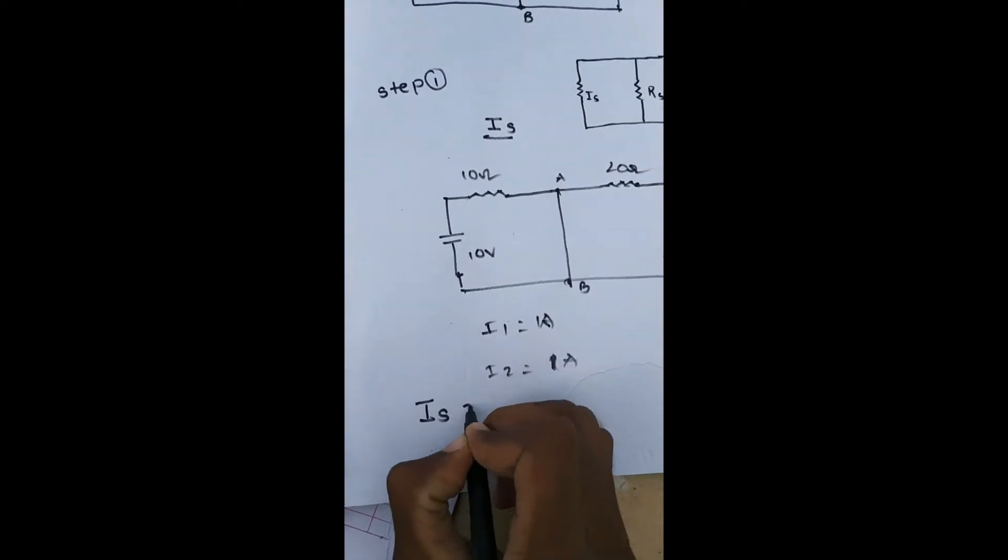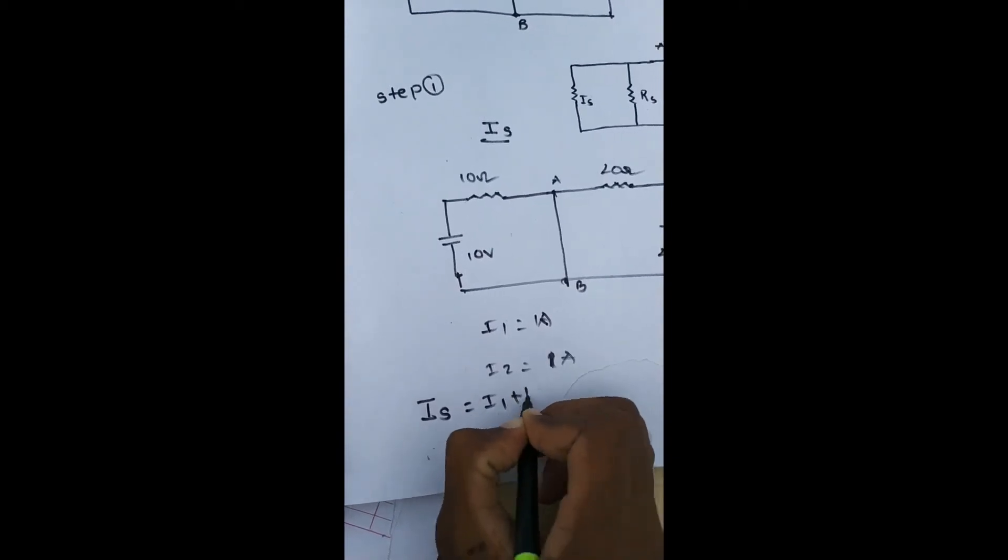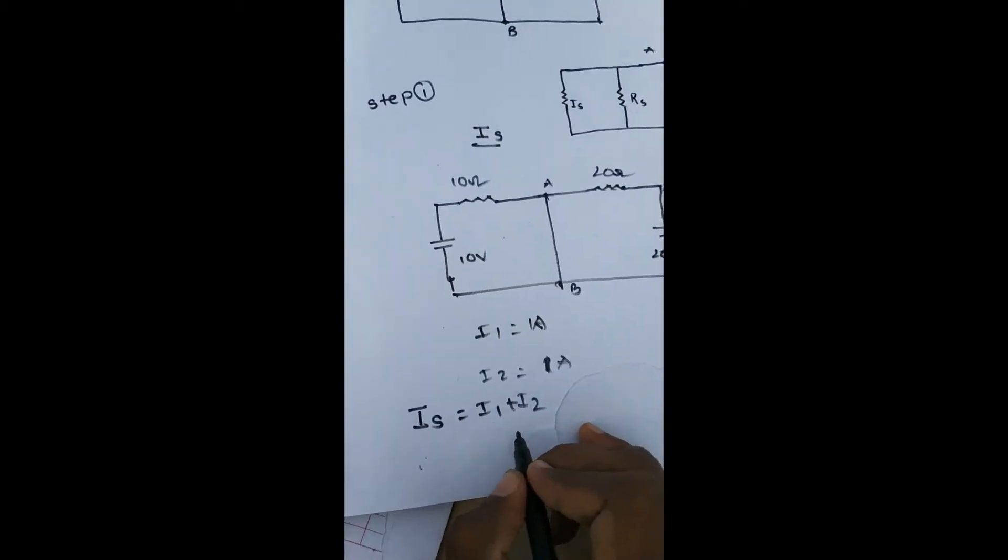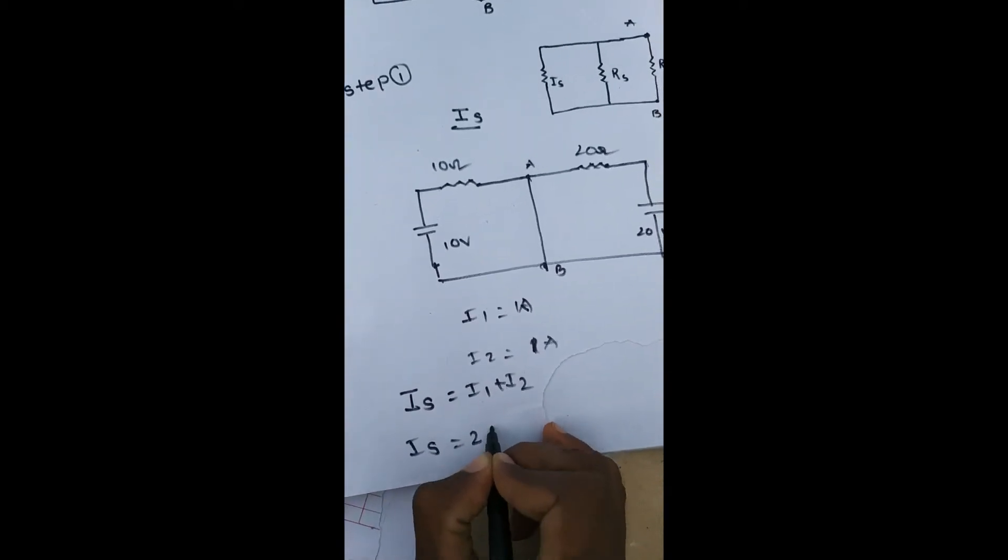Then, i short-circuit is equal to i1 plus i2. Here i1 value is 1 amp, i2 value is 1 amp, that means Is is equal to 2 amp.